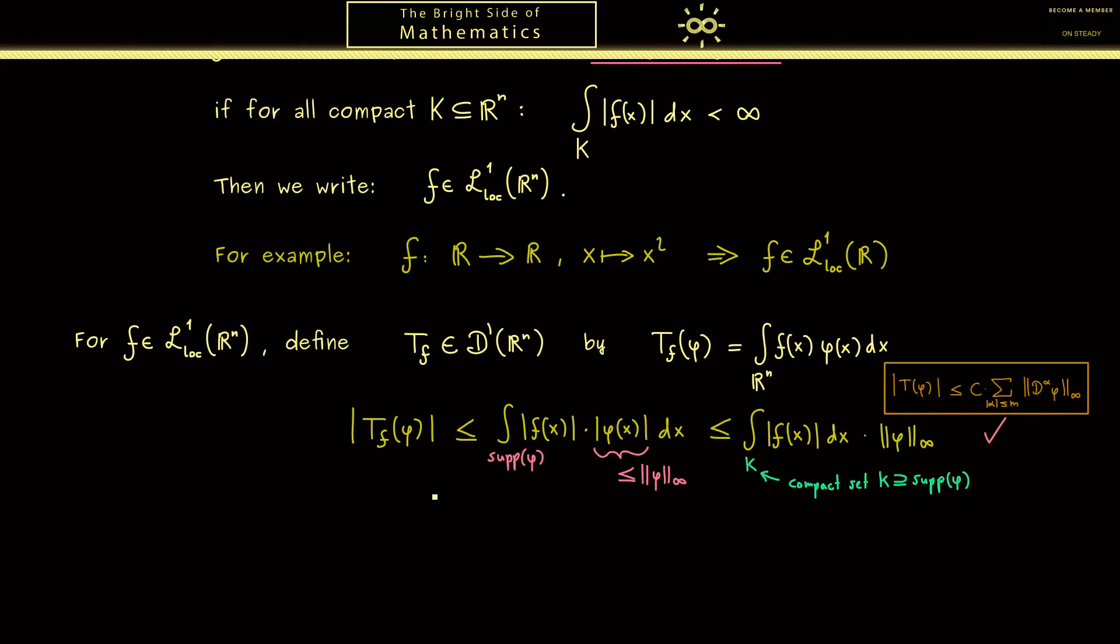And therefore these distributions are just called regular distributions. To put this into a definition, you would say a distribution T is called regular if there is a locally integrable function f such that T is the same as T_f. So the linear map T can actually be written as an integral in this sense. So you could say these are the distributions that behave like normal functions as we already know it, but we also know there are much more distributions than that.